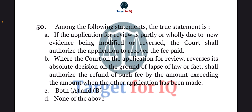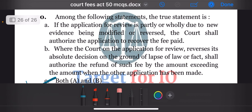The last question: among the following statements, the true statement is — A. If the application for review is partly or wholly due to new evidence being modified or reversed, the court shall authorize the applicant to recover the fee paid. B. Where the court on the application for review reverses its absolute decision on the ground of lapse of law or fact, it shall authorize the refund of such fee. C. Both A and B, or D. None of the above. The correct answer is option C. Both A and B.